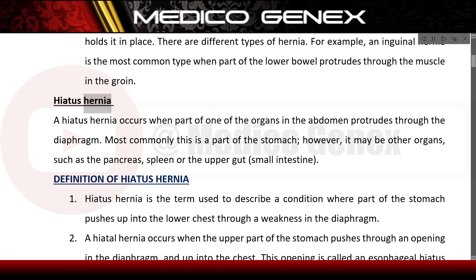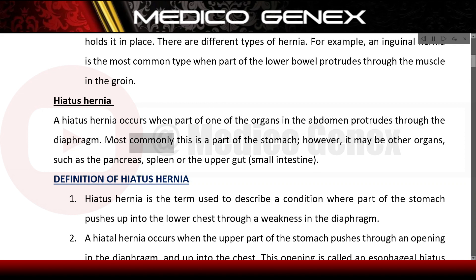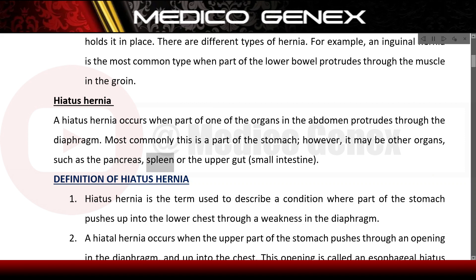Hiatus hernia. A hiatus hernia occurs when part of one of the organs in the abdomen protrudes through the diaphragm. Most commonly this is part of the stomach; however, it may be other organs such as the pancreas, spleen, or the upper gut — small intestine.